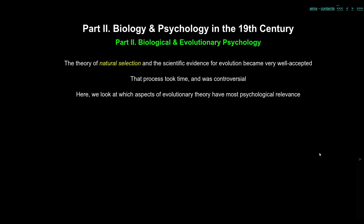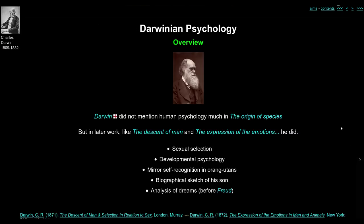This acceptance wasn't just a single event — it took time and was controversial. We're going to look at which aspects of evolutionary theory have most entered into psychological theory and psychological relevance. In his book, Darwin didn't mention much about human psychology in The Origin of Species, but in later works he wrote several more books, in particular The Descent of Man and The Expression of the Emotions in Man and Animals. He talked about sexual selection, developmental psychology, and some psychological functions in orangutans and other animals. He did a biographical psychological sketch of his son and even did a bit of dream analysis before Freud got there.